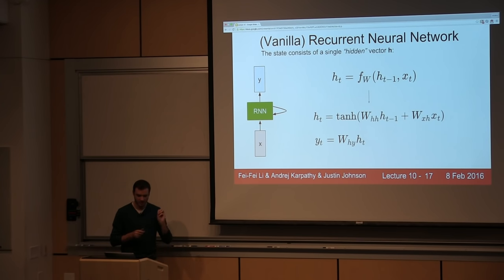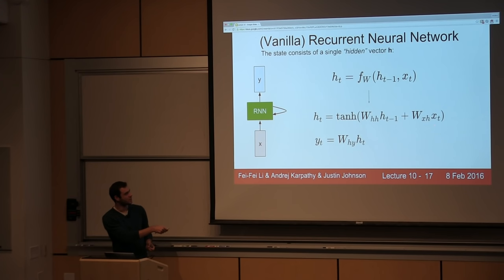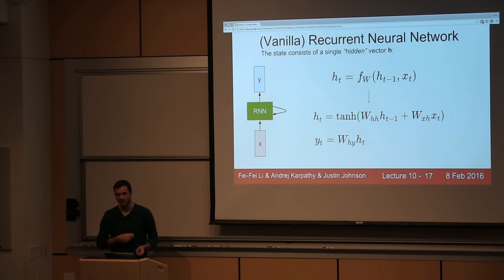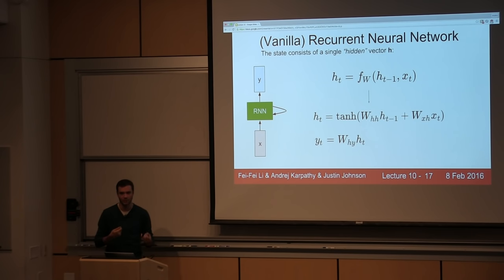In a specific case — a vanilla recurrent neural network — the state is just a single hidden state h. We have a recurrence formula that tells you how to update your hidden state h as a function of the previous hidden state and the current input xt. In the simplest case we have weight matrices Whh and Wxh. They basically project both the hidden state from the previous time step and the current input, those add together, and then we squish them with a tanh. That's how we update the hidden state at time t. We can base predictions on top of h using just another matrix projection on top of the hidden state.